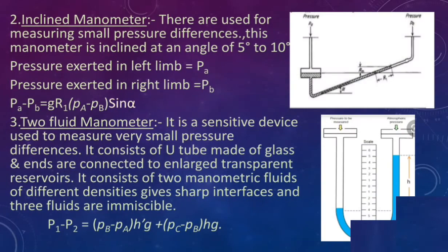Inclined manometers are used for measuring small pressure differences, inclined at an angle of 5° to 10°. The pressure difference is given by: Pa − Pb = g·Rm(ρa − ρb)·sin α.